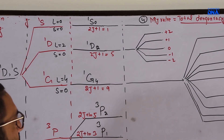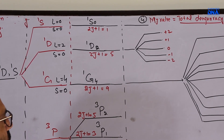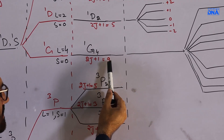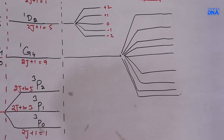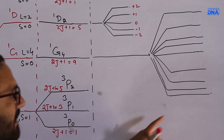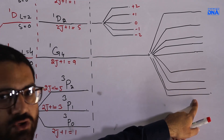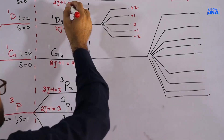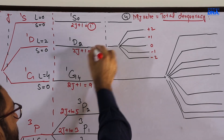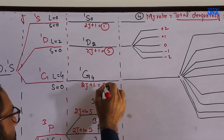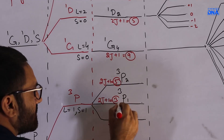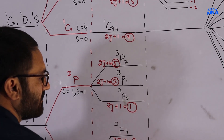For ¹G₄, using 2J+1 = 9, you get 9 further splittings. So: from ¹S₀ you get 1, from ¹D₂ you get 5, from ¹G₄ you get 9, from ³P₂ you get 5, from ³P₁ you get 3, and from ³P₀ you get 1 mJ value.